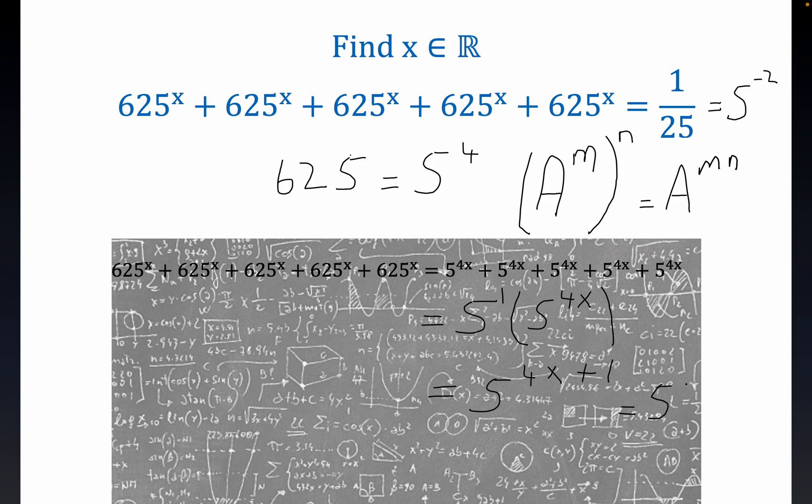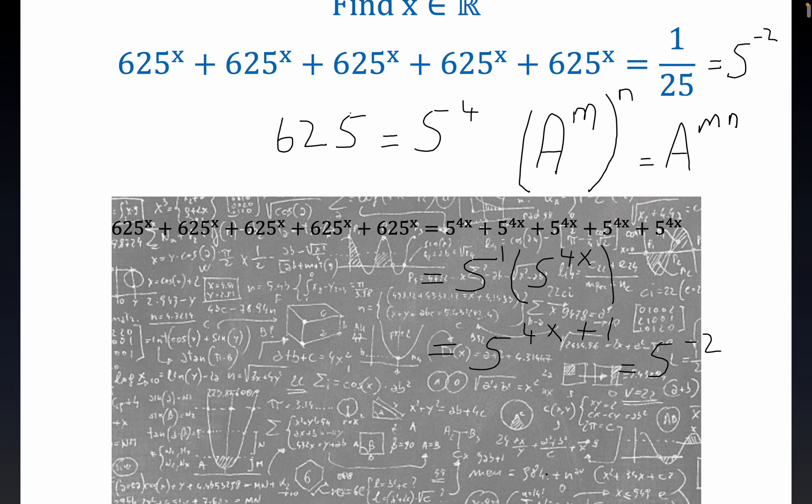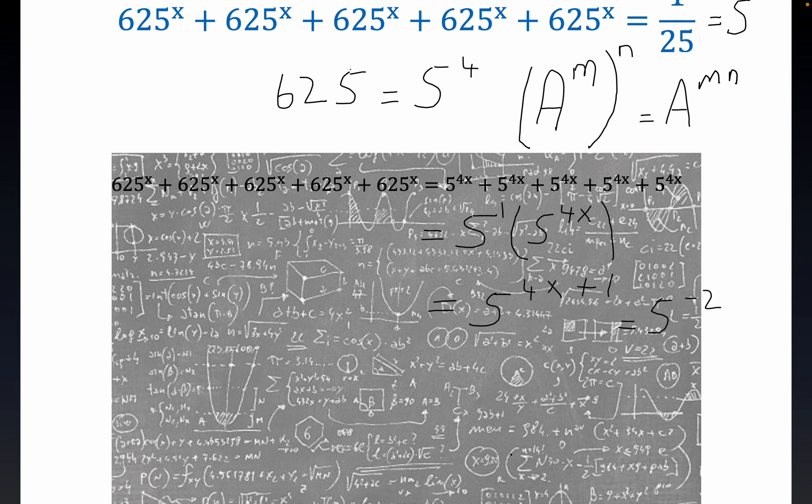And the exponential function is a one-to-one function, that's important. That means we can equate these exponents. And so what we end up here with is 4x plus 1 equals negative 2.